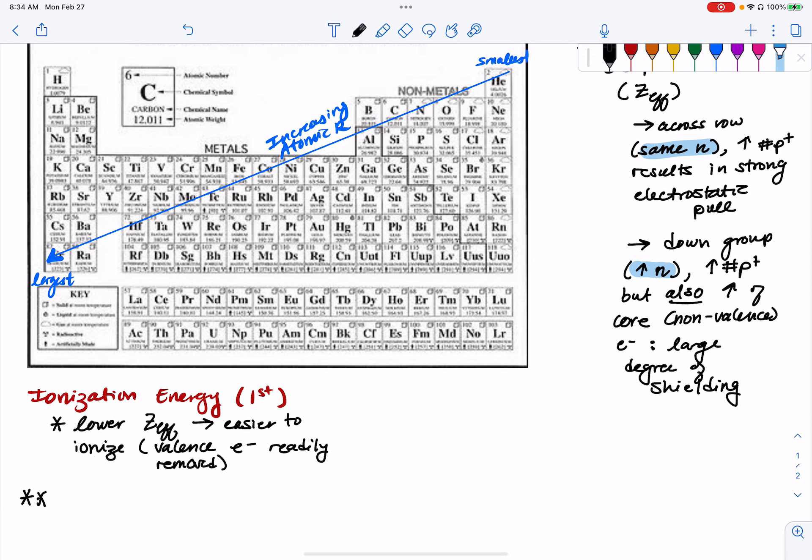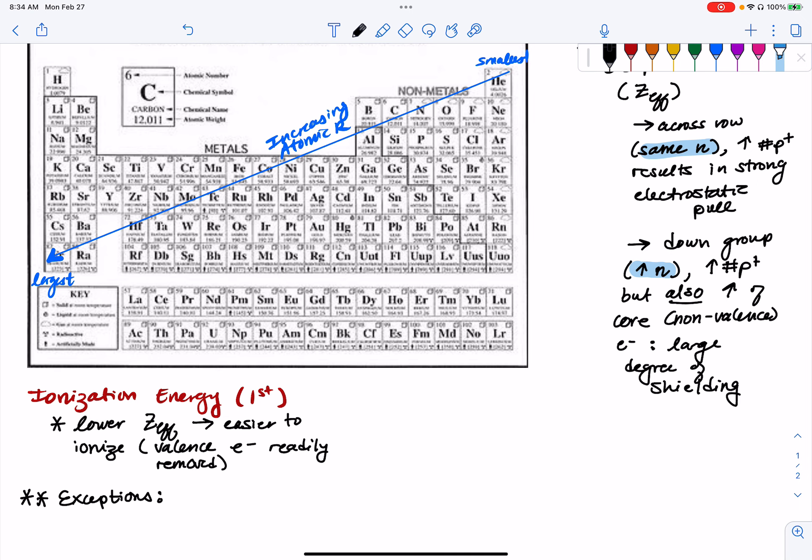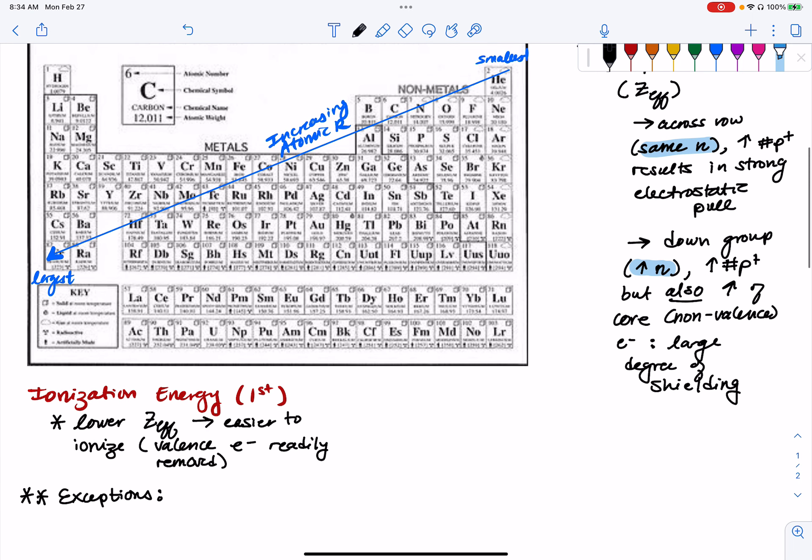Now there are some general exceptions that you have to look out for because when we're talking about electrons and their placement in an atom, we're talking about electron configuration. And we know from our discussions of electron configuration that orbitals that are either perfectly full or are half full are orbitals that are particularly stable. So some exceptions to this general trend is we have to look out for stable, half or 100% full orbitals.